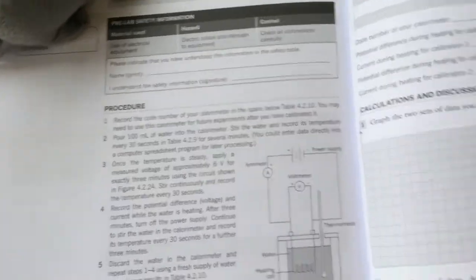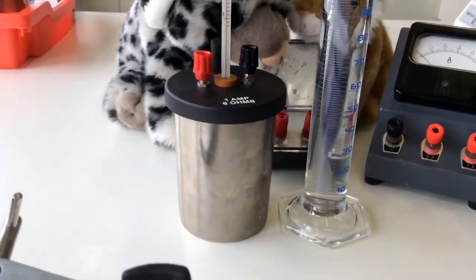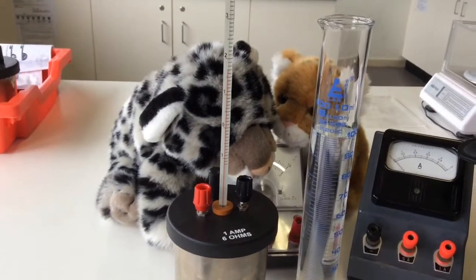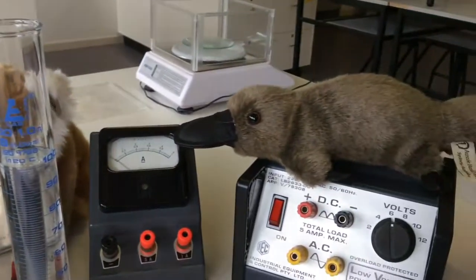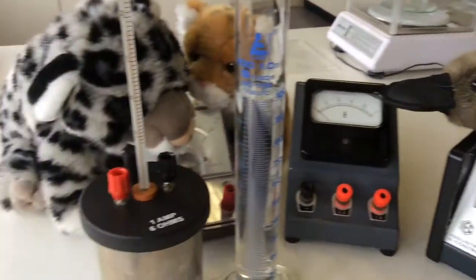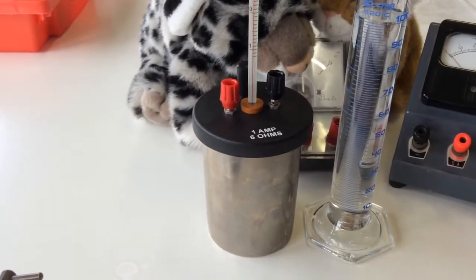I'm just going to use this one that I've set up. And you might be able to see Snowy the snow leopard, Tilly the tiger, and we've got Penny the platypus are helping out today. So this calorimeter is number one.